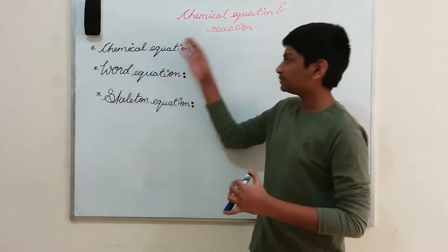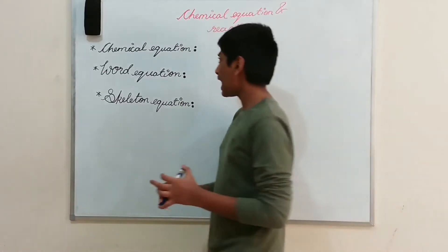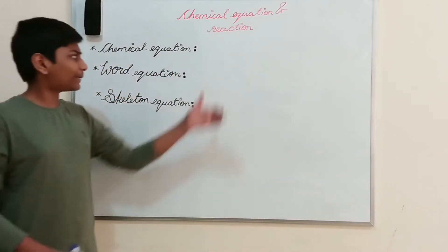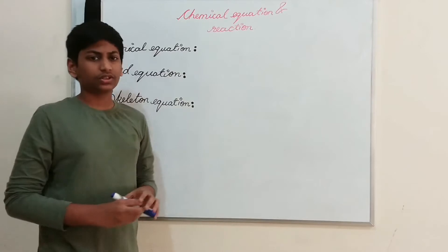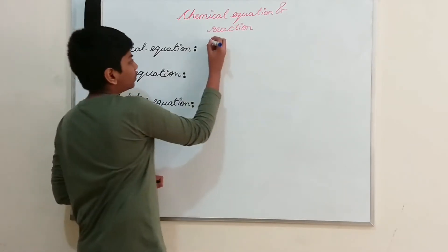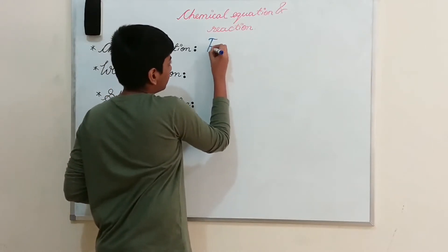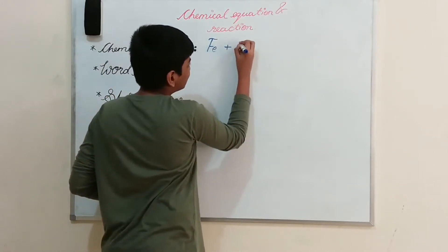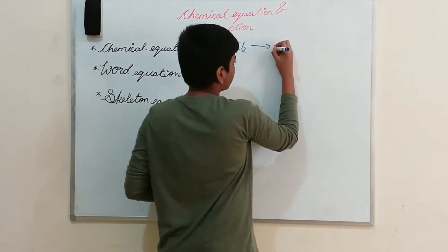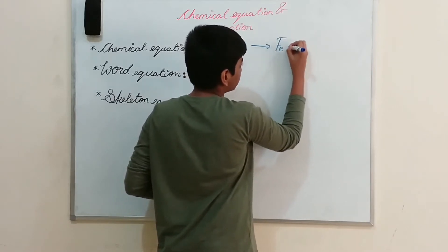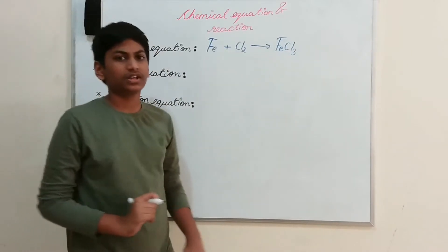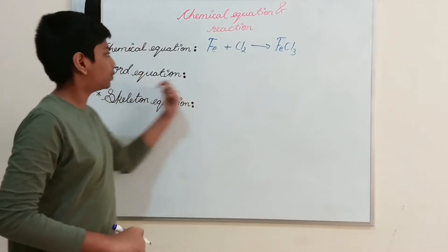Here we have some types of equations under this topic: chemical equation, word equation, and skeleton equation. We know what a chemical equation is. For example, taking iron and chlorine: Fe + Cl₂ gives us FeCl₃. So this is a chemical equation. Now we will come to the second thing — word equation.